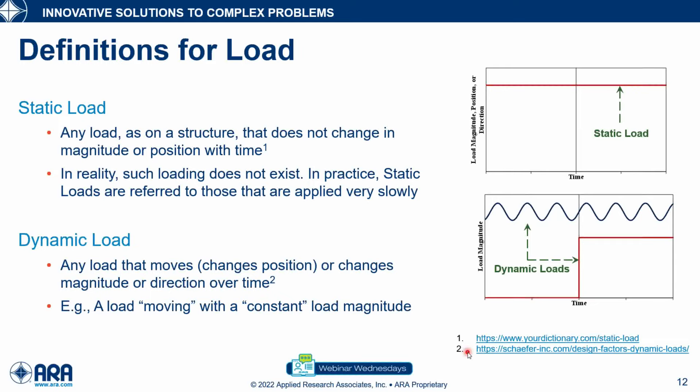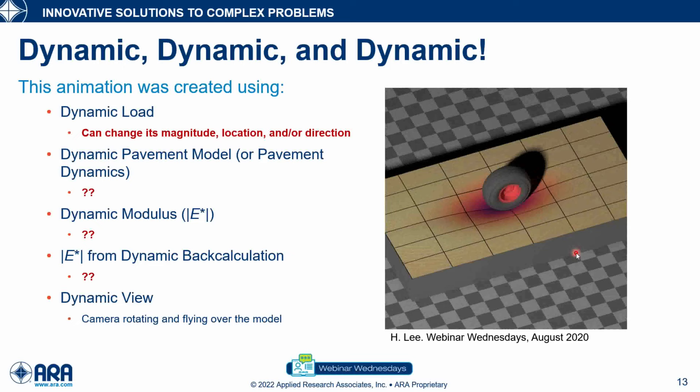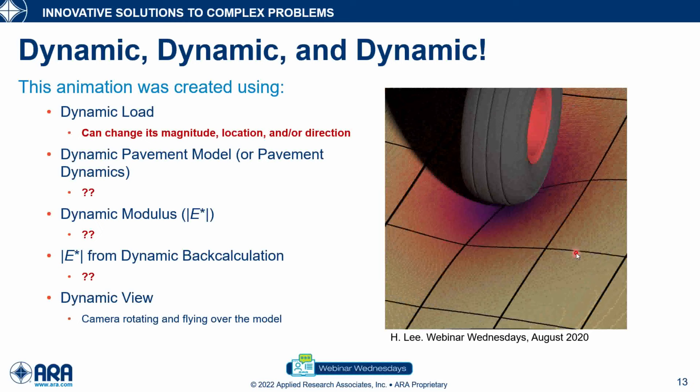Starting with definitions — there are two types of loading: static versus dynamic. A static load is basically a load that was there, is still there, and will be there forever without any changes. A dynamic load is essentially any load that is not static — something is changing. It's not limited to the magnitude itself; the load can change its magnitude, its position, or the direction it is acting. If any of those change, it is a dynamic load.